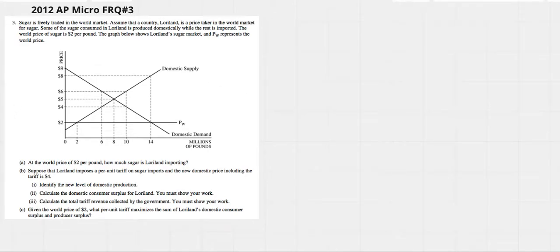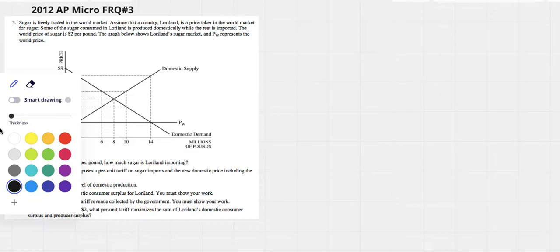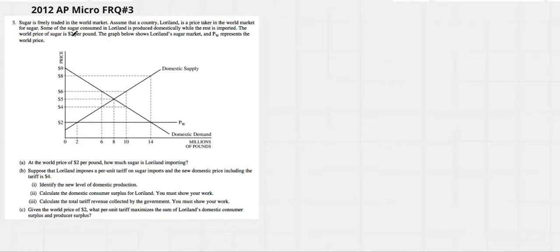2012 AP Micro FRQ number 3. Let's see if we can do it. Underline before we start. Sugar is freely traded in the world market. Loreland is a price taker in the world market. Some of the sugar is produced domestically, while the rest is imported. The world price of sugar is $2 per pound. PW is the world price. Here's our world price.